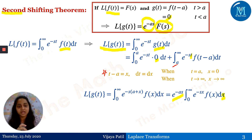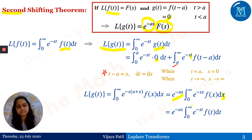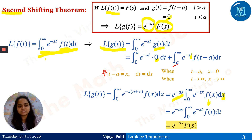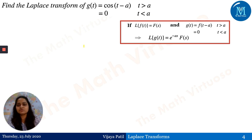We take out the constant e to the power minus as, since x is the variable of integration and everything else is constant with respect to x. The remaining integral is zero to infinity of e to the power minus sx times f(x) dx — which is just the definition of the Laplace transform, written in terms of x instead of t. That is not a substitution; it's just relabeling. Therefore, the result is e to the power minus as into F(s), confirming the Second Shifting Theorem.